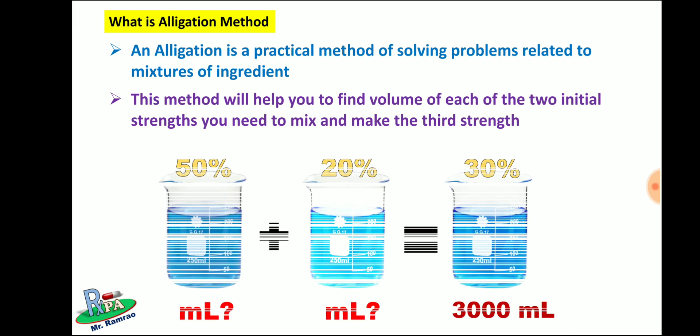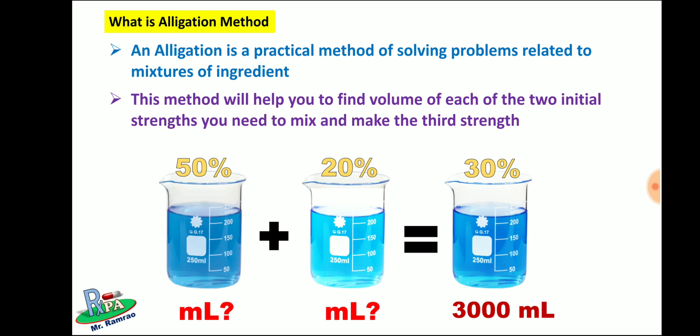For example, suppose you have 50% and 20% dextrose solutions and you have to make 3000 ml of 30% dextrose solution. You must know how much ml of 50% and how much ml of 20% must be mixed to get the desired 30% concentration with 3000 ml volume. This can be calculated using allegation method.